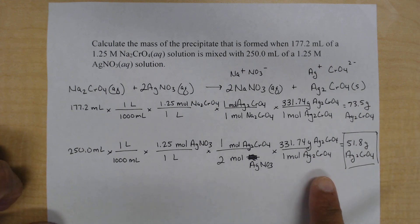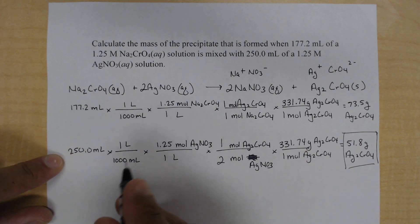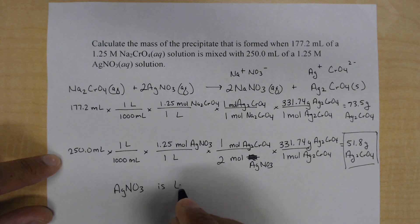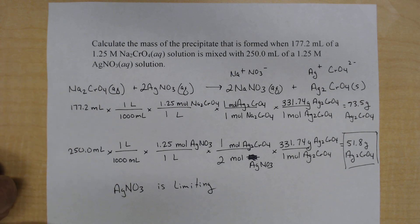So we've answered the question. First, we've answered that silver nitrate, our solution of silver nitrate is limiting. The sodium chromate is in excess. Our limiting reactant limits how much product we can get. And what we can say here is that 51.8 grams of our solid silver chromate is our theoretical yield.